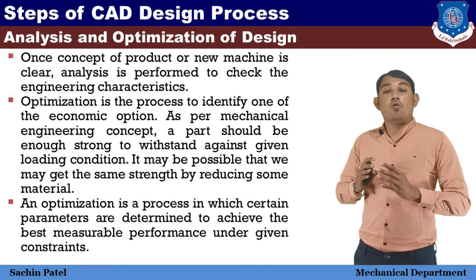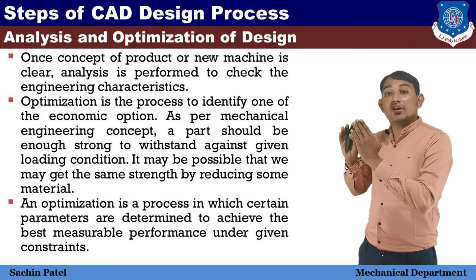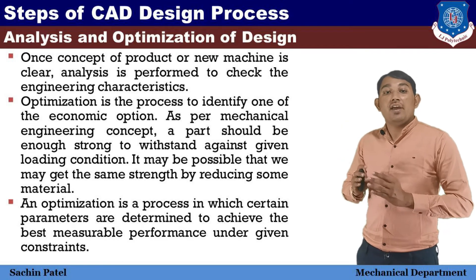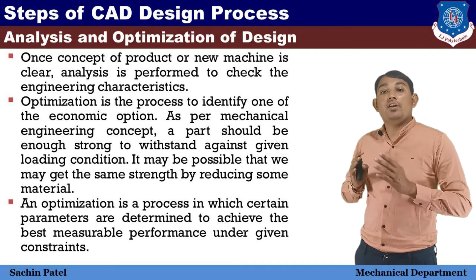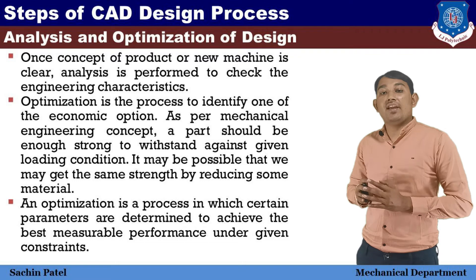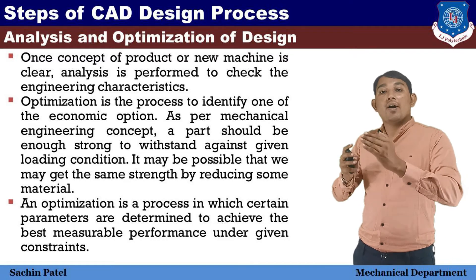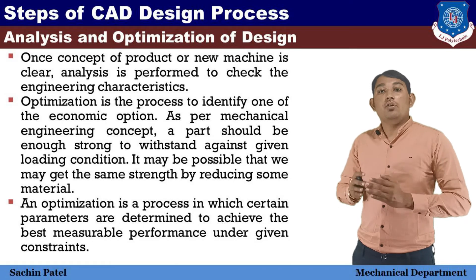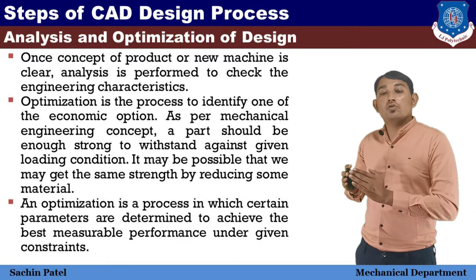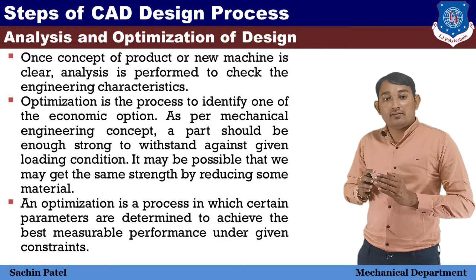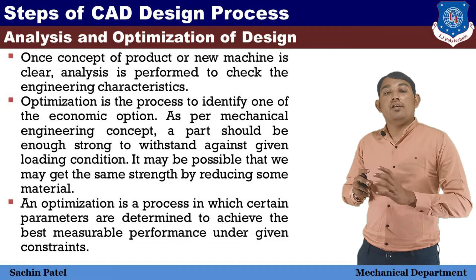Optimization is the process to identify the most economical option. From the various options available, the best suitable economical option is chosen — that is called Optimization. As per mechanical engineering concept, a part should be strong enough to withstand against given loading conditions. It may be possible that we get the same strength by reducing some material, making the total product more economical. Optimization is a process in which certain parameters are determined to achieve the best measurable performance under given constraints.